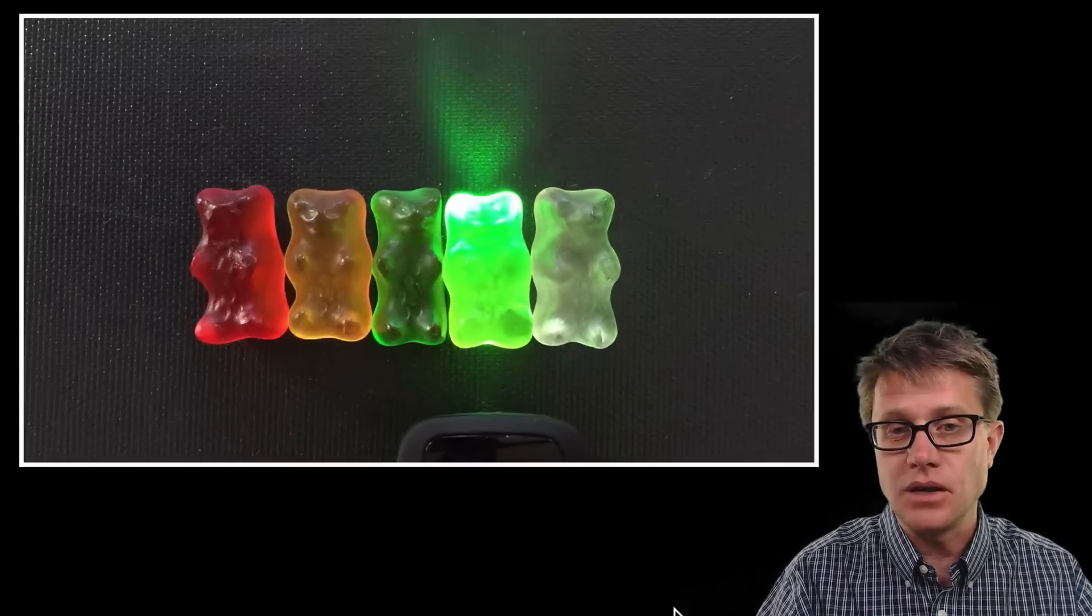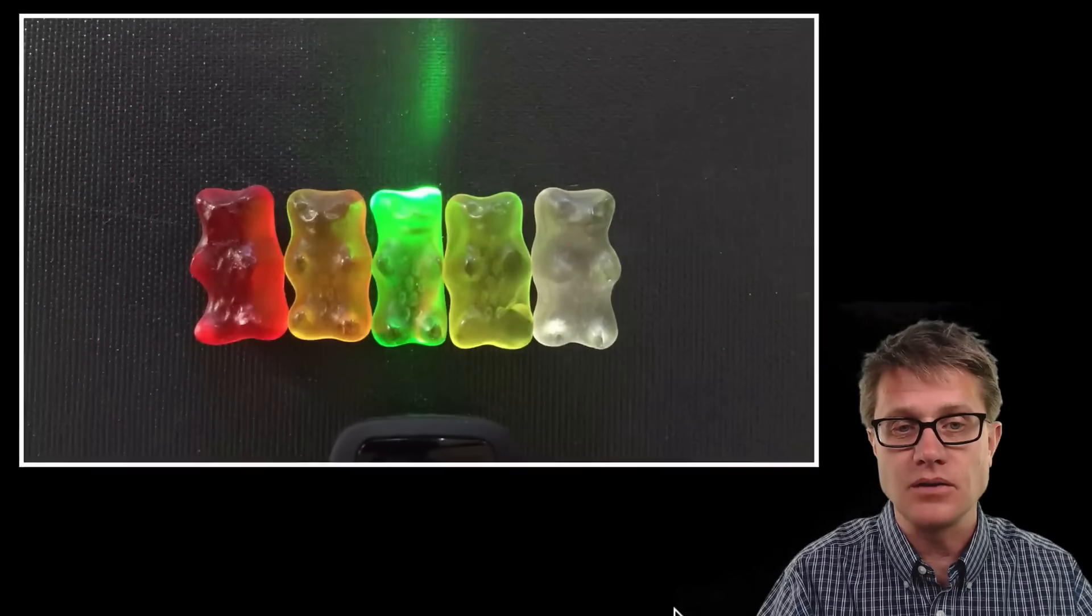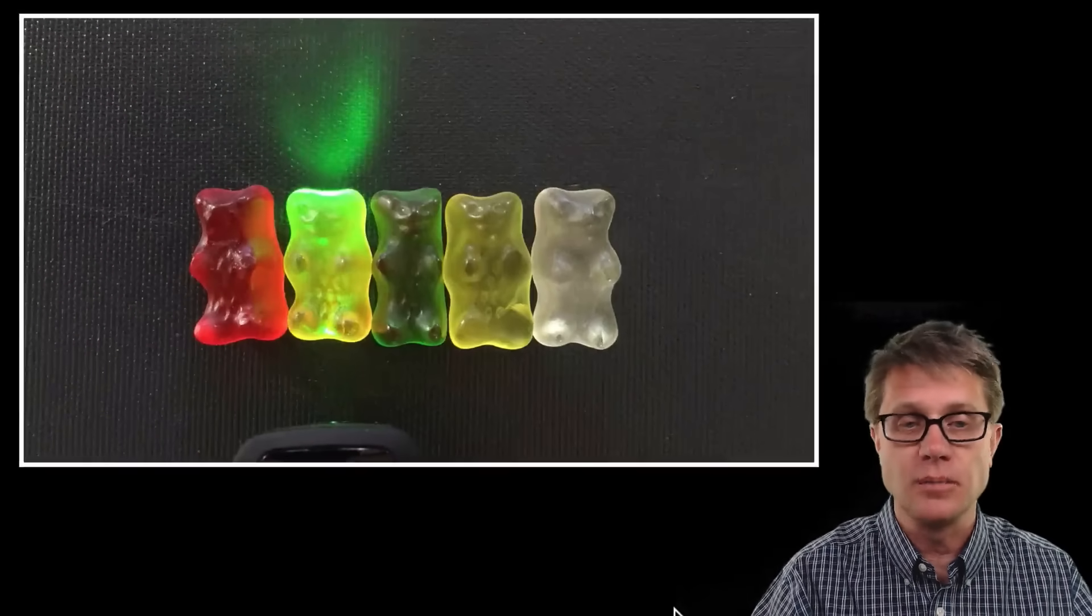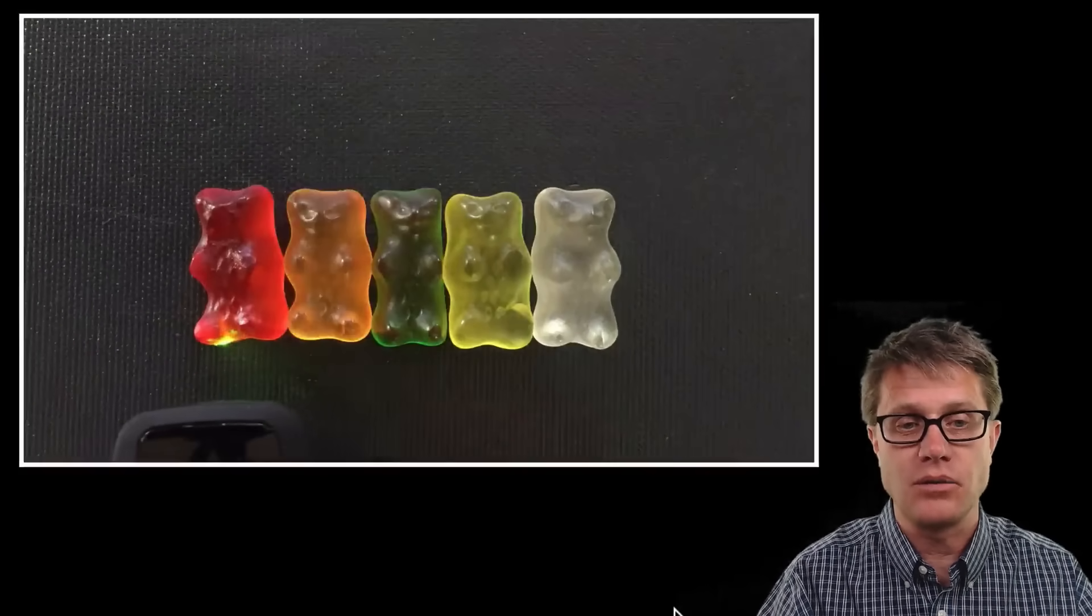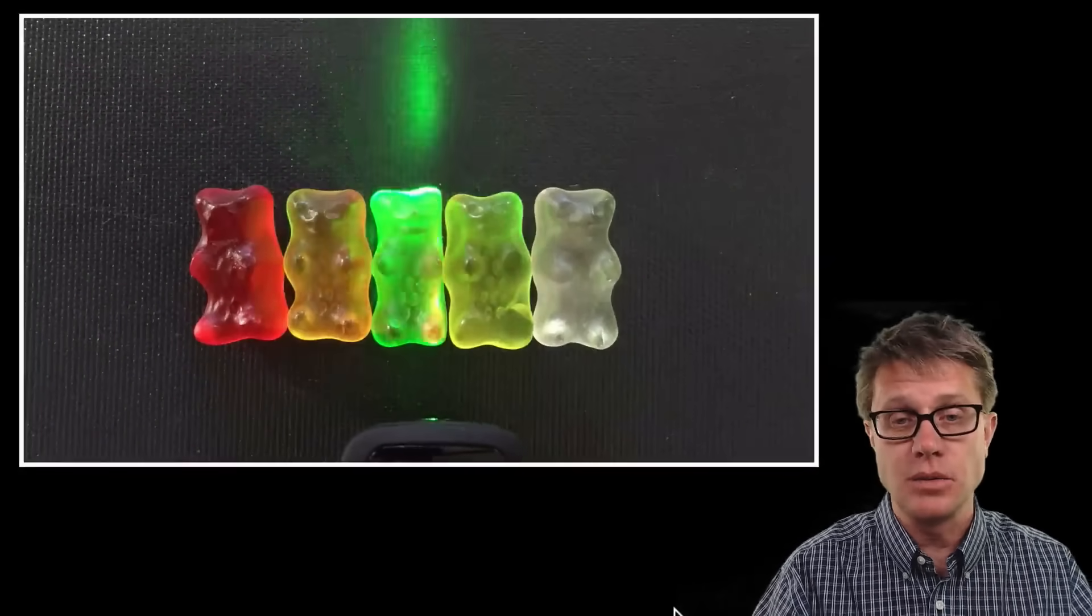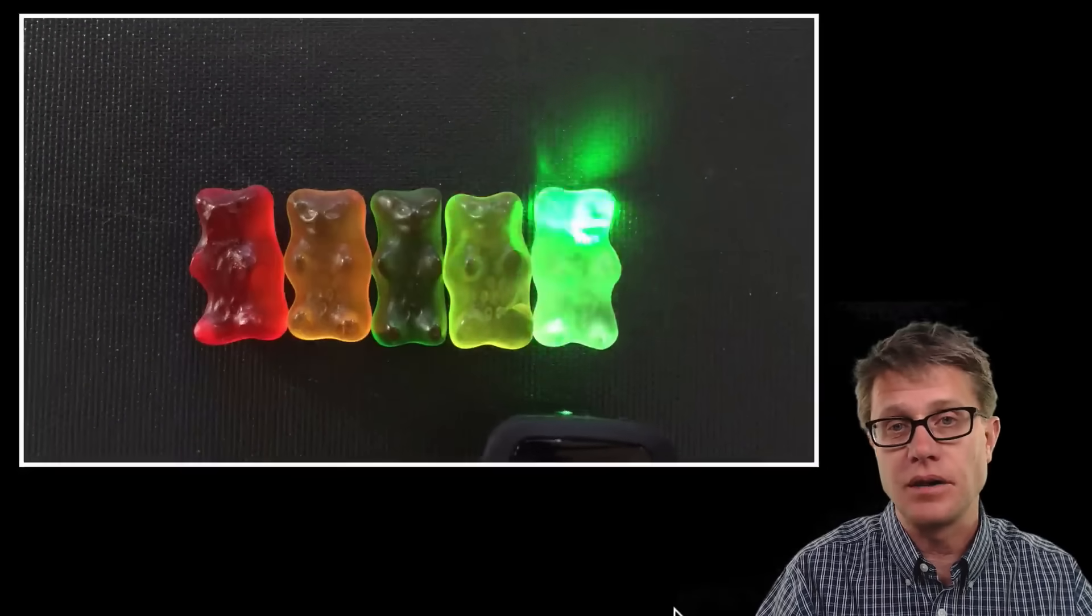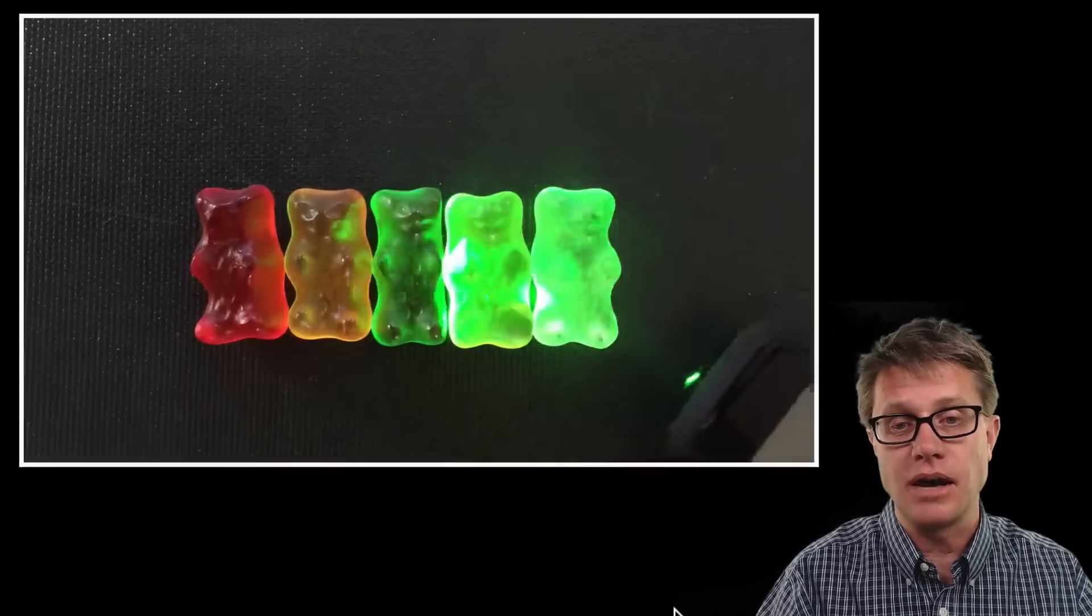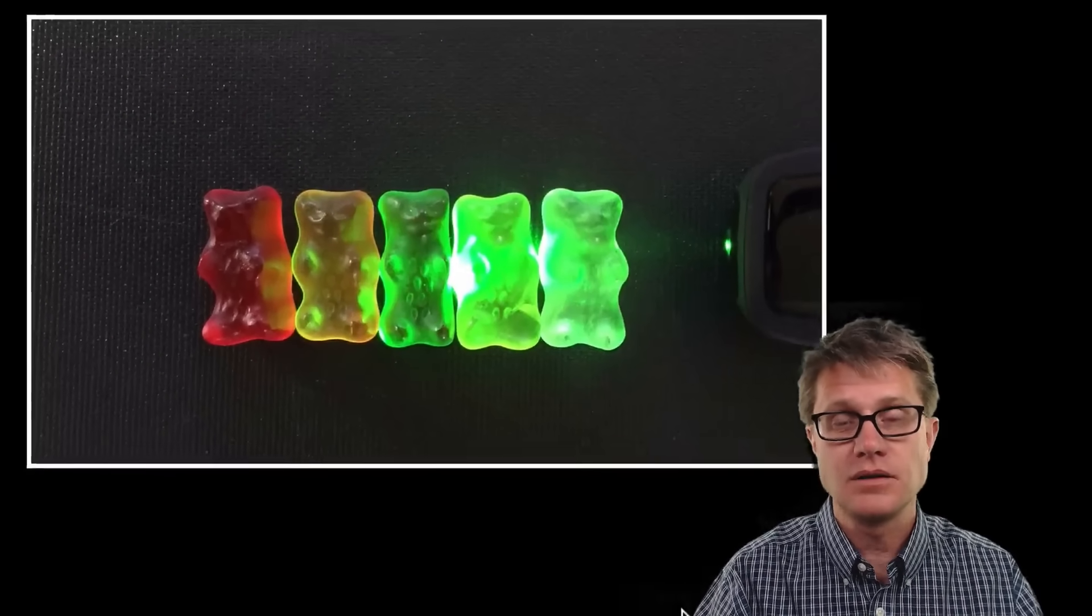If we continue the video and watch what happens, you can see each of those gummy bears are transmitting and absorbing a different amount. But when we get to the red, we see a bunch of reflection, a bunch of absorption, but not much transmission. And again that is dependent upon the pigments and the chemicals that we have inside the gummy bears itself.